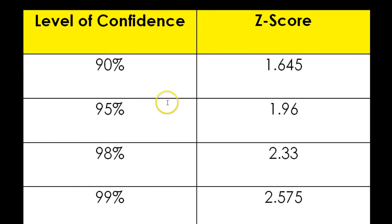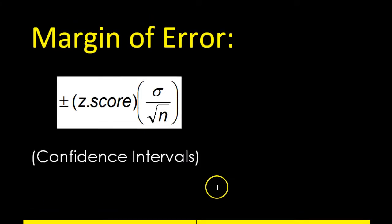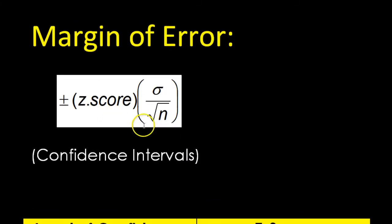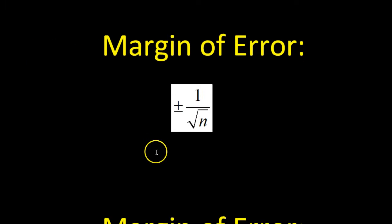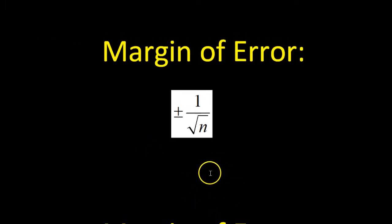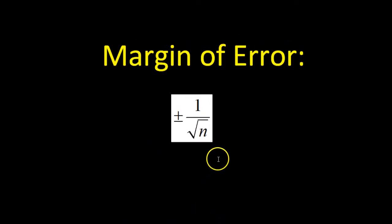So if they speak about confidence levels, you're going to use these z-scores and this formula. If the confidence level is not mentioned, then we're just going to use your basic margin of error formula.